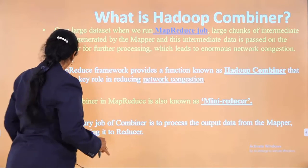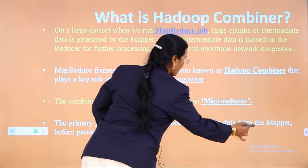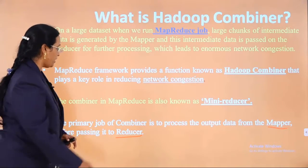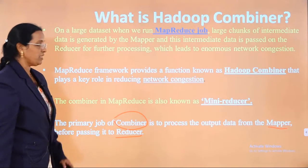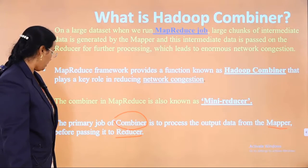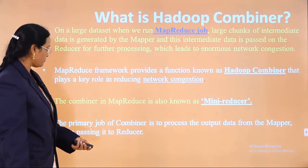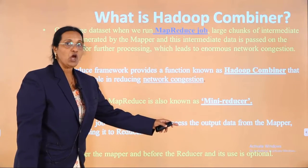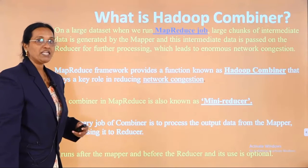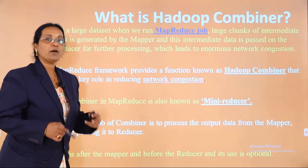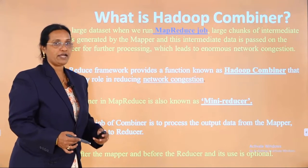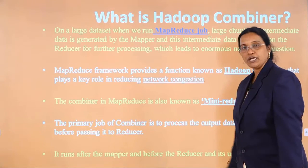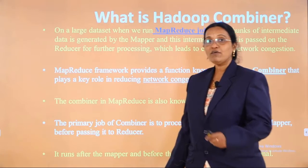The primary job of the combiner is to process the output data from the mapper before passing it to the reducer. It runs after the mapper and before the reducer. Usage of the combiner is optional — it is not mandatory, but it acts as a mini reducer to address the network congestion problem.